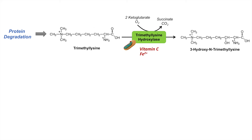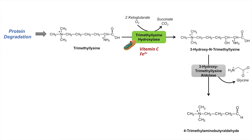Once we have 3-hydroxy-N-trimethyl lysine, it is acted on by 3-hydroxy trimethyl lysine aldolase. This enzyme cleaves 3-hydroxy-N-trimethyl lysine, releasing glycine and producing the product 4-trimethylaminobutyraldehyde. This enzyme requires pyridoxal phosphate as an important coenzyme.